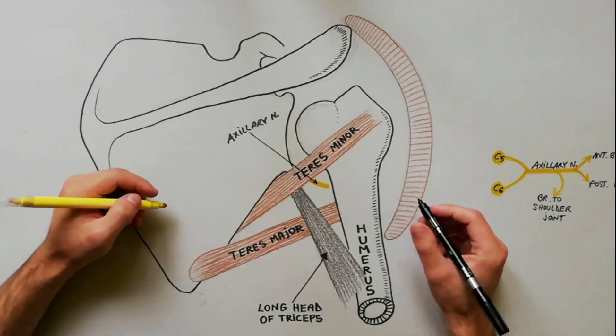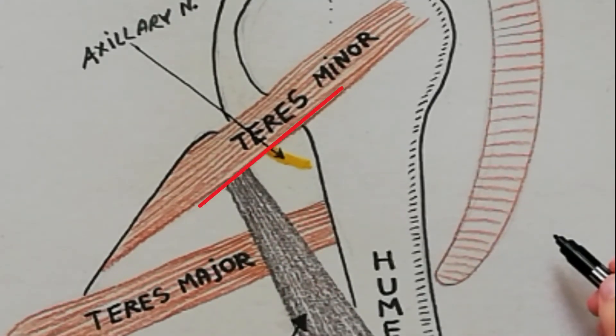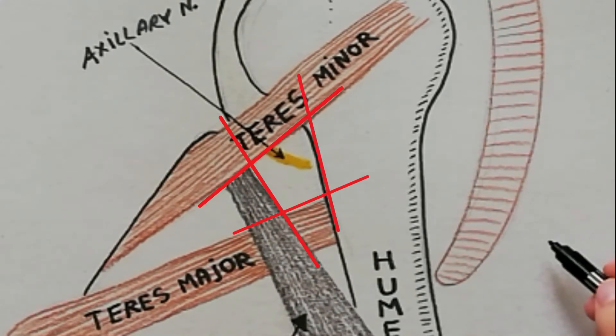The quadrangular space is bounded superiorly by the teres minor, inferiorly by the teres major, medially by the long head of triceps, and laterally by the surgical neck of humerus.